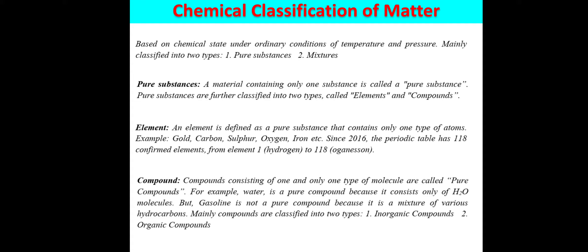Now we come to the chemical classification of matter. Based on the chemical state under ordinary conditions of temperature and pressure, matter is chemically classified into two types: first is pure substances and second is mixtures. A pure substance is a material that contains only one type of substance with no impurity. Pure substances are further classified into elements and compounds.